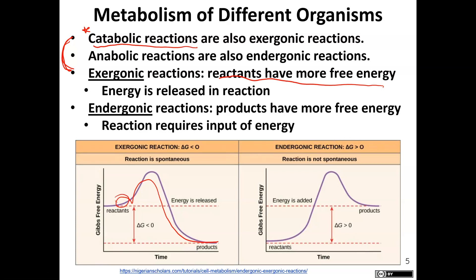An endergonic reaction is linked to anabolic reactions — they go hand in hand. Endergonic reactions are reactions where the reactants have less energy, so you need an input of energy. The products end up having more energy than the reactants did, meaning energy is taken in during the process.